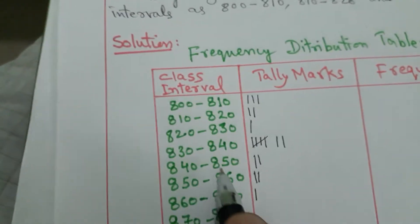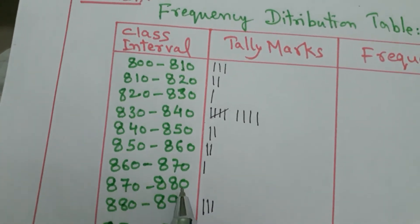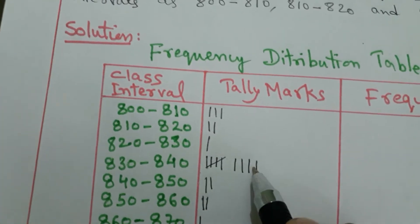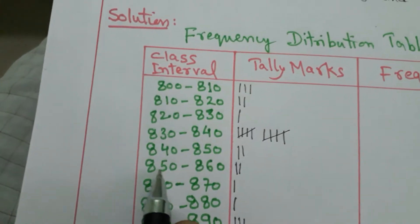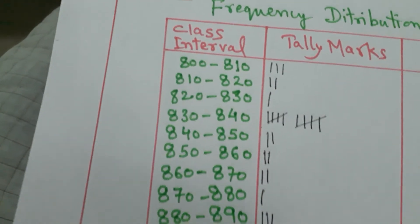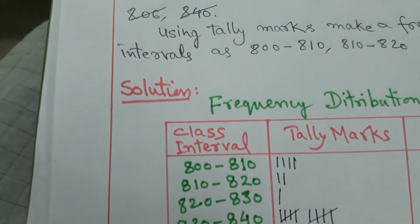885 is here, 835 is here. 825 again here, 836 again in the same. 878, 880 here. Now 840 is here. So see, four lines have come. Now for the fifth one you cut like this. The fifth tally. 868 is here, 890 is here. 806 is between 800 to 810, tally mark is here. And last, 840 is between 830 and 840.